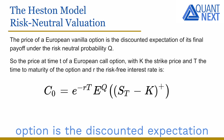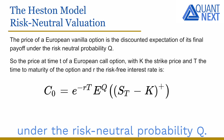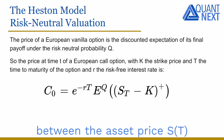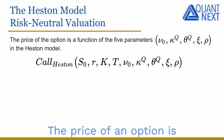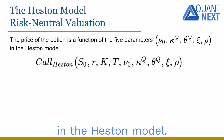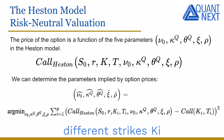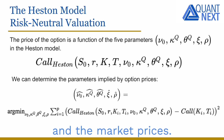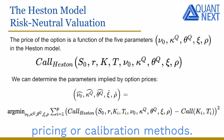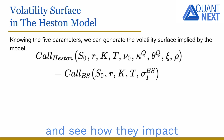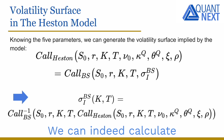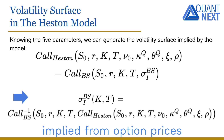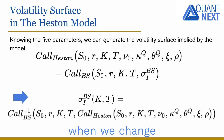The price of a European vanilla option is a discounted expectation of its final payoff under the risk-neutral probability Q. The price of a European call option is the discounted expectation of the maximum between zero and the difference between the asset price ST at maturity and the strike price K. Using a set of options with different strikes Ki and times-to-maturity Ti, we estimate the five parameters which minimize the pricing error between model prices and market prices. We will instead play with the Heston parameters and see how they impact the shape of the implied volatility surface.